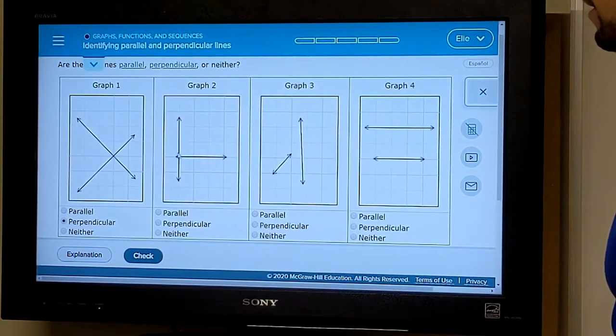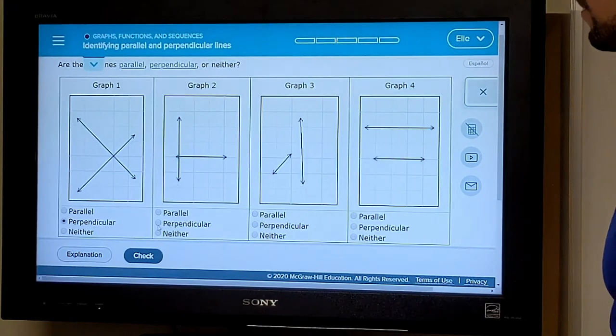These are very easy to tell. They obviously intersect at a right angle. We can even make a little right angle symbol right here. So these are perpendicular.